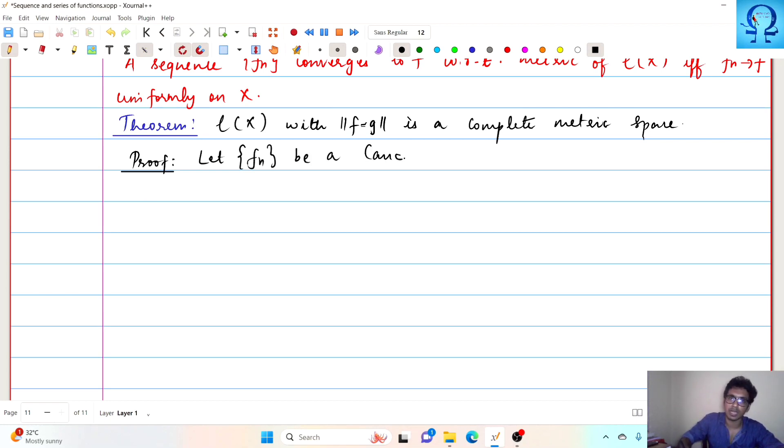For that purpose, we are taking an arbitrary Cauchy sequence in script C of X. This means that since it is Cauchy, what does it mean? Then for any epsilon positive, there exist N such that norm of f_n minus f_m is less than epsilon for n greater than or equal to N and m greater than or equal to N.